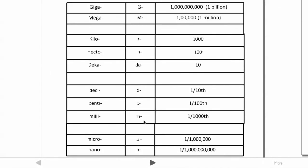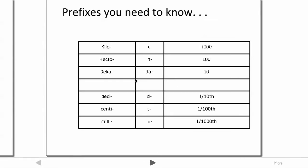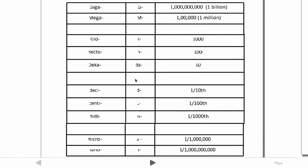There are more prefixes, but the six you need to know are: kilo, hecto, deca, deci, centi, and milli. Some helpful ones beyond those: giga — like gigabytes with computers — means a billion of something, so a gigagram is a billion grams. Mega means million.